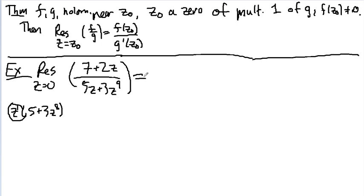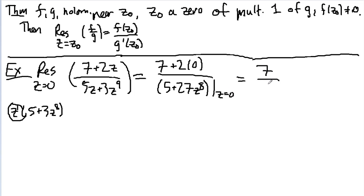So the residue is really, you just plug in 0 into the top, and you plug in 0 into the bottom, but you have to take the derivative of the bottom. So take the derivative and evaluate it at z equals 0. So you get 7 over, well, that's going to be 5. So the residue is 7 fifths.